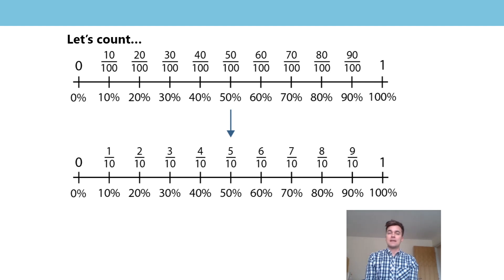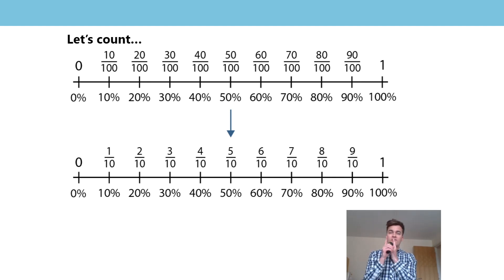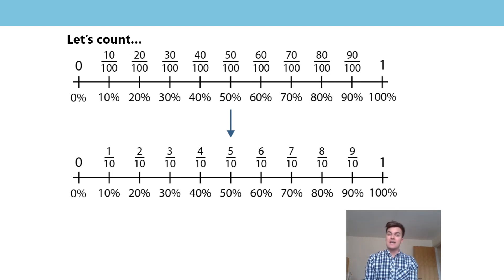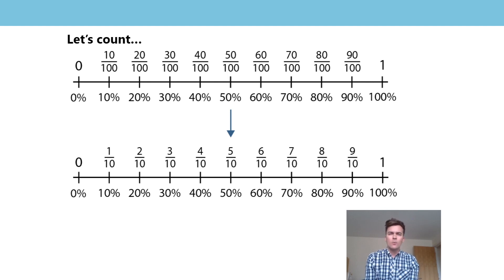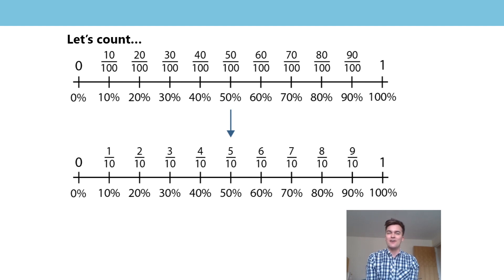This time counting tenths. Ready? Same again on three. Zero, one tenth, two tenths... five tenths, six tenths, seven tenths... ten tenths. Did you not say ten tenths? Of course, one — ten tenths are equivalent. What did you say at five tenths? Did anyone say anything different? One half. Five tenths is equal to one half — we could have said that.